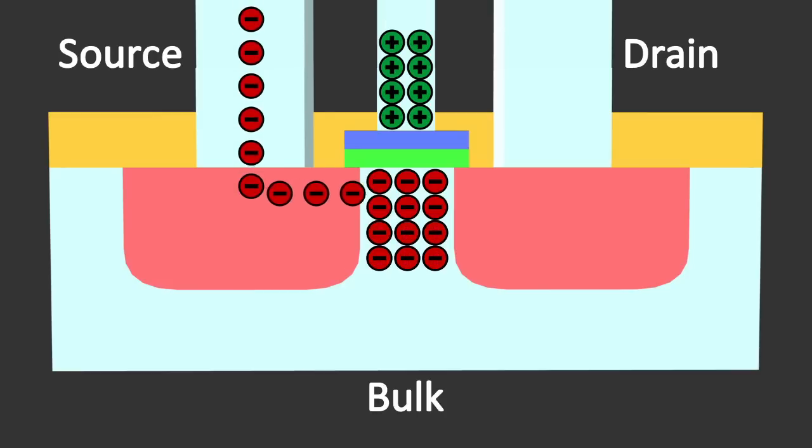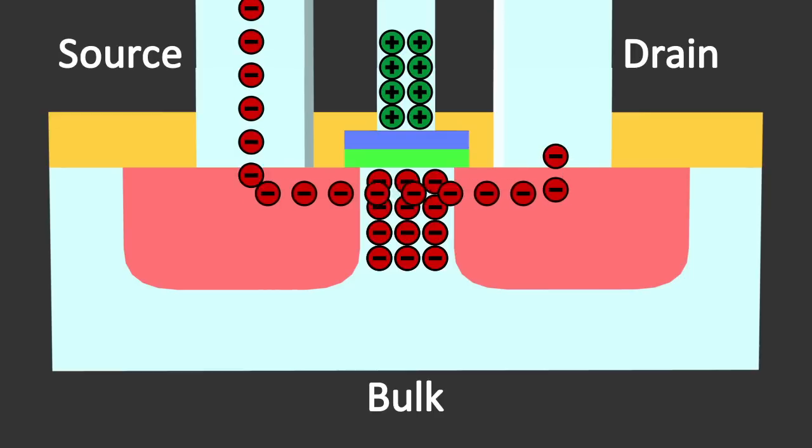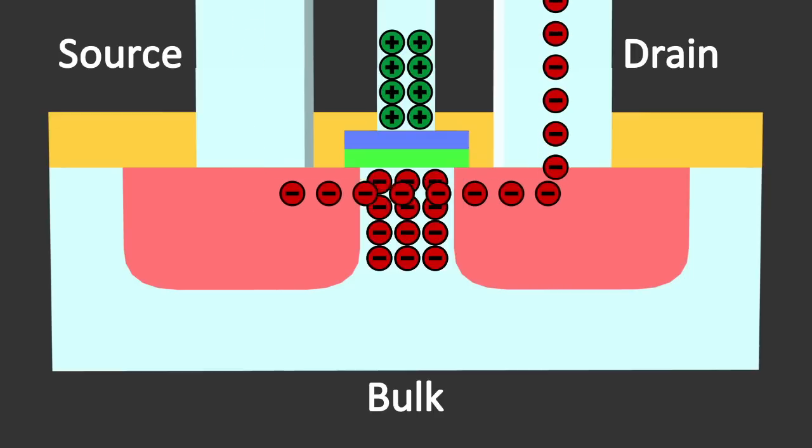Since no current is able to flow between source and drain when there is no potential on the gate, this type of transistor is called enhancement-mode MOSFET.